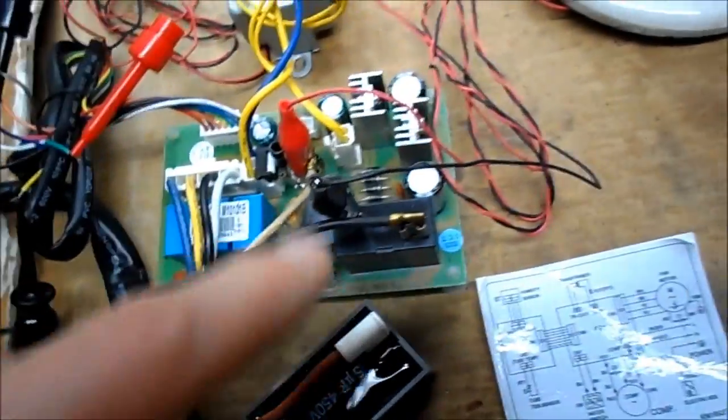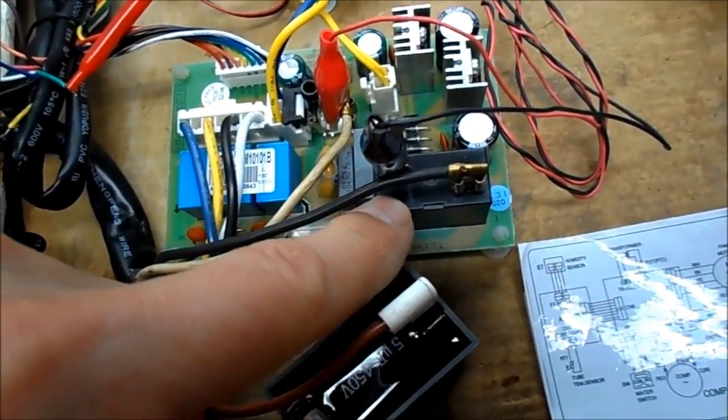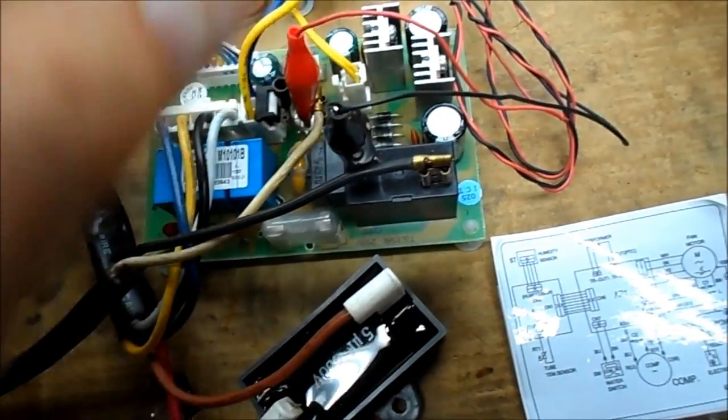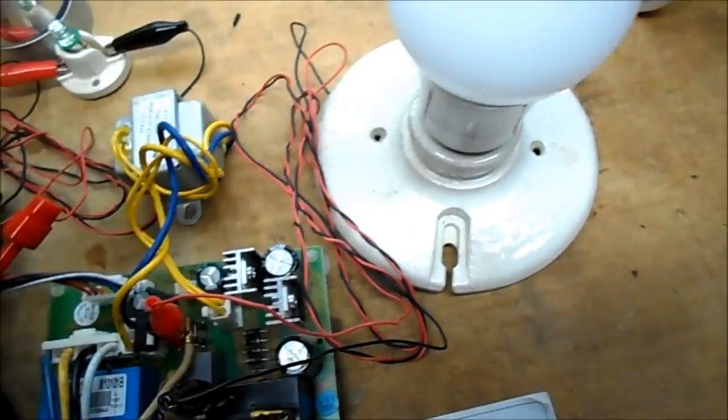Anyway, there's three mini relays here: the low, medium, high of the fan motor. This relay here is where the power comes in, it switches the hot for the compressor. So I have that hooked up to the LED light bulb socket.